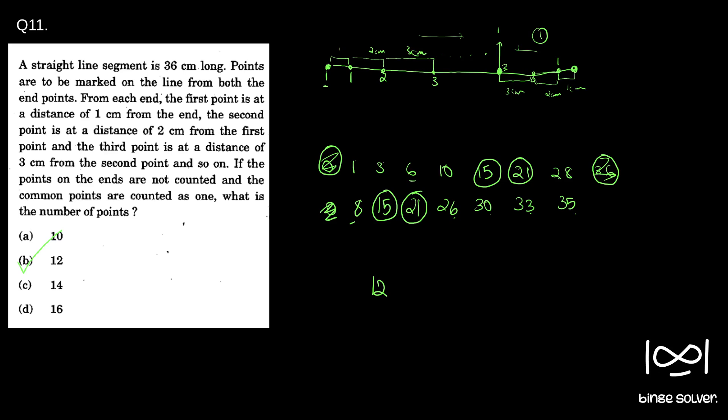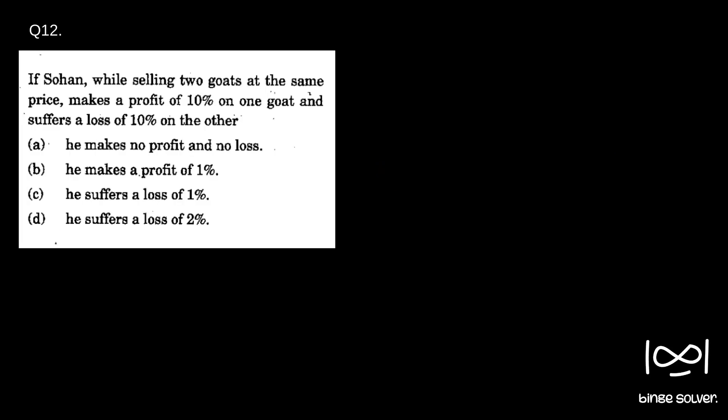Moving on to the next question, Question 12. If Sohan, while selling two goats at the same price, makes a profit of 10% on one goat and suffers a loss of 10% on the other. The options are: (a) he makes no profit no loss, (b) he makes a profit of 1%, (c) he suffers a loss of 1%, (d) he suffers a loss of 2%. This is a tricky question.